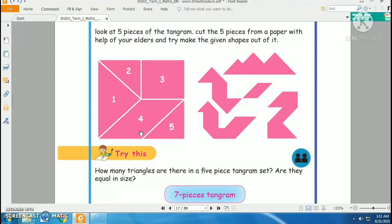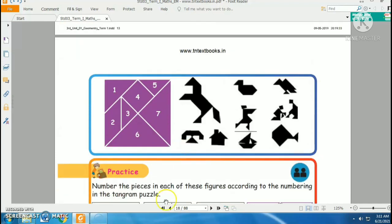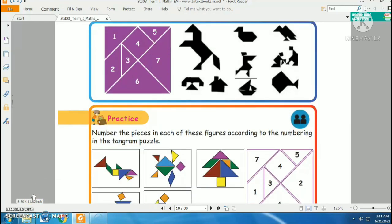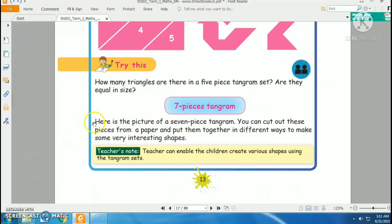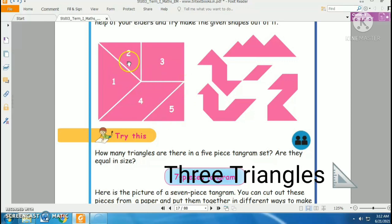I'll teach you in detail when we meet in Google Meet. First, you have a question: How many triangles are there in a five-piece tangram set? Are they equal in size? Let's find the answer. Let's count where the triangles are. Here is a triangle, here is another triangle, and here is another triangle. Triangle number one, triangle number two, and triangle number three. You got it, so we have three triangles.